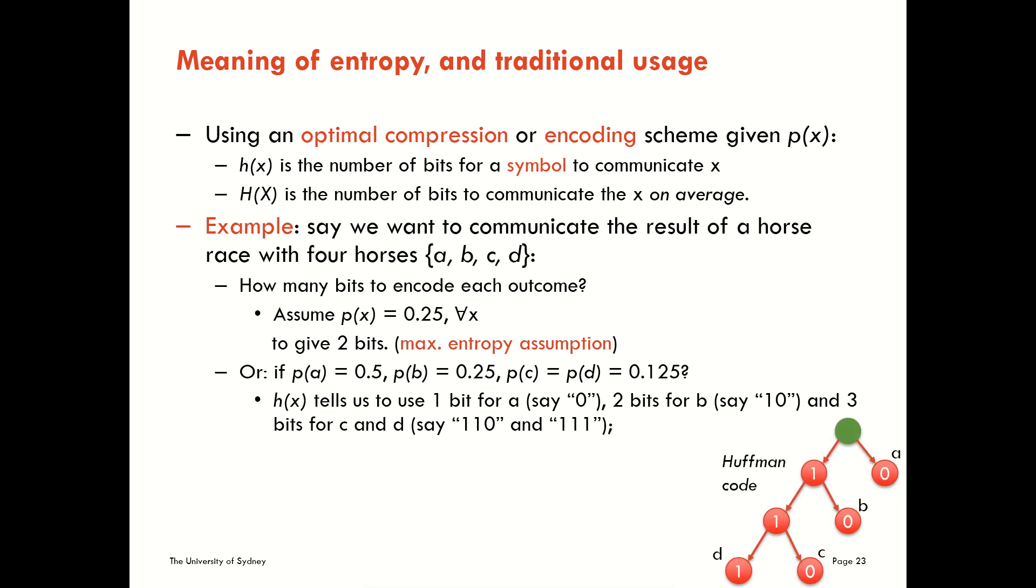We can find the encoding scheme that we should use using an approach called Huffman coding. This is a little bit out of scope for us, but I'll talk you through it briefly. You can read more about this in the text if you wish. Basically, what we do is we line up our outcomes in order from most to least probable.